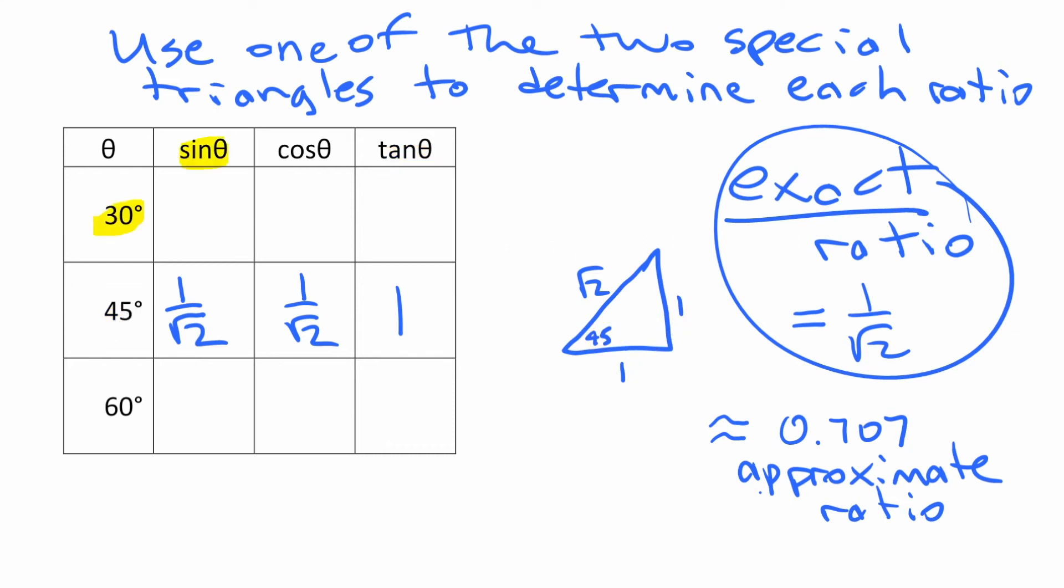If we're going to do some of these other ones, like sine of 30, we need the other special triangle. We're going to write it like that and put that 30 degree angle down there. Label the sides. That 1 is across from the 30, the smallest side, and 2 and root 3. 2 is the hypotenuse. So from the 30 degree angle, opposite over hypotenuse is 1 over 2 for sine of 30.